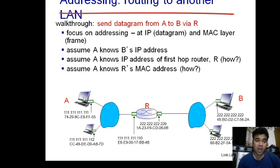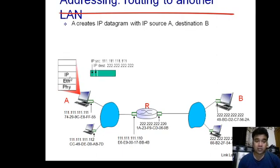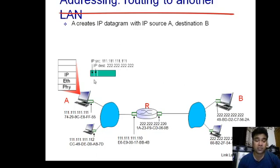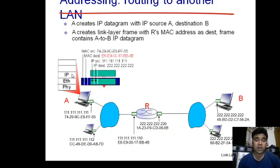First, A generates a packet and converts that packet into a frame. At the IP level, a packet is generated. As you know, IP works at the network layer, and the network layer is responsible for delivering a packet from source to destination — it handles end-to-end communication. The network layer creates a packet and puts source and destination IP addresses in its header. The source IP address is 111.111.111.111 and the destination IP address is 222.222.222.222.